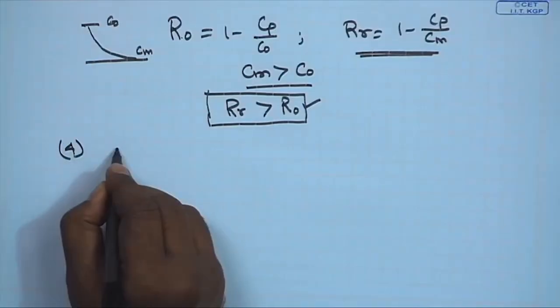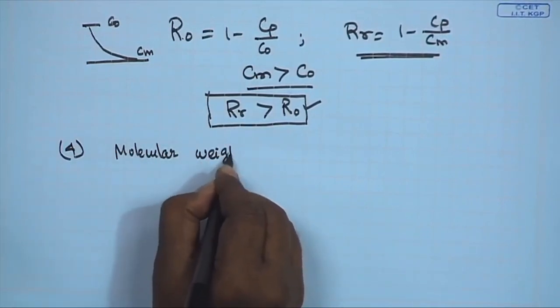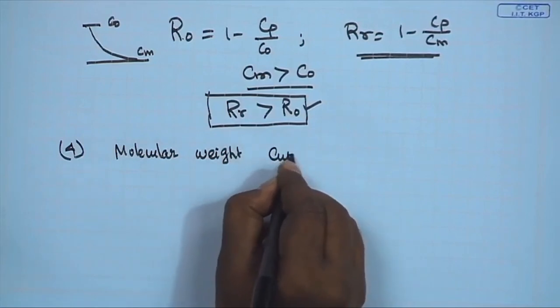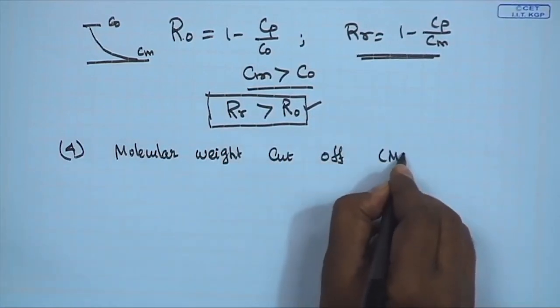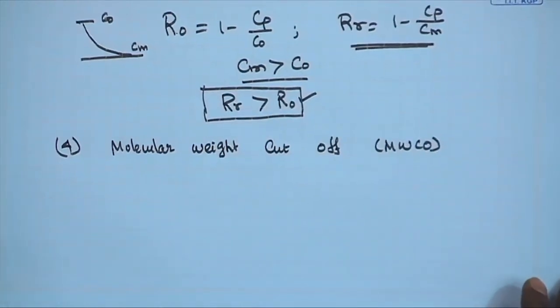The next definition that will be quite important in our case is molecular weight cut-off. Sometimes you will see this MWCO of the membrane is really very important in order to specify a membrane. In a membrane, there cannot be a uniform pore size throughout its whole matrix.